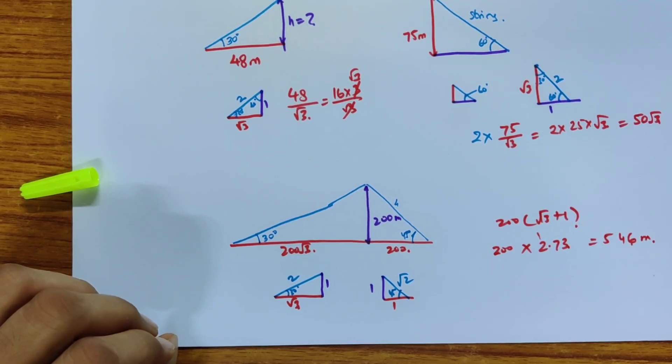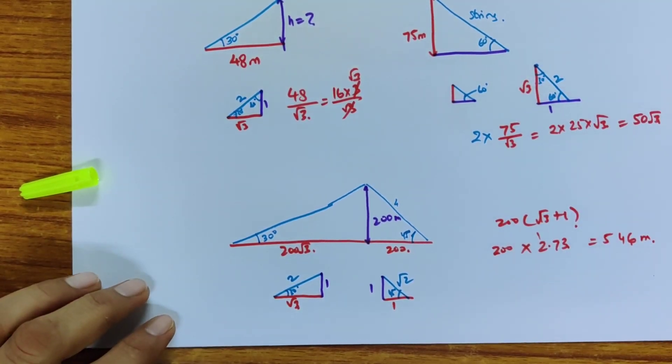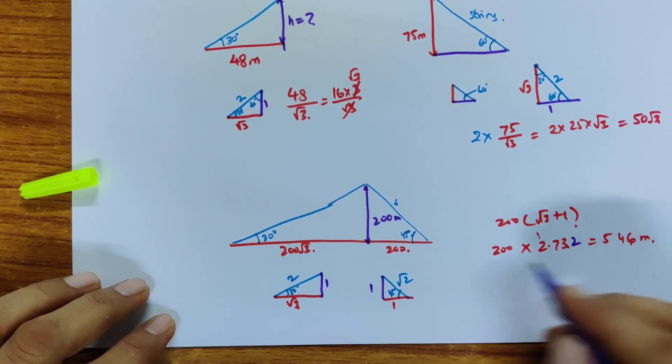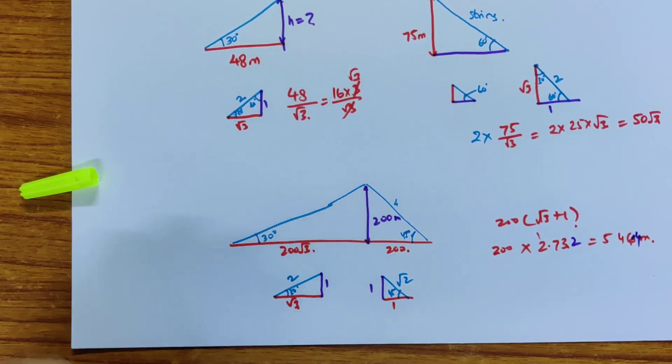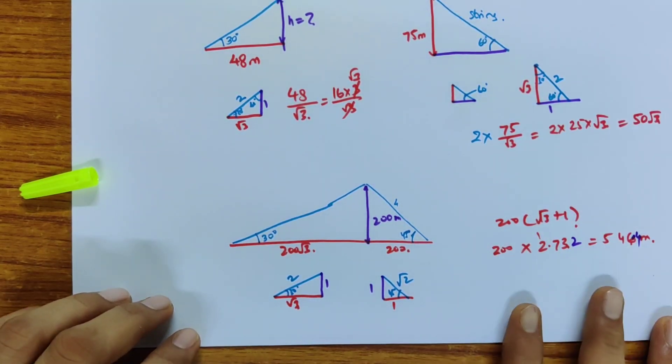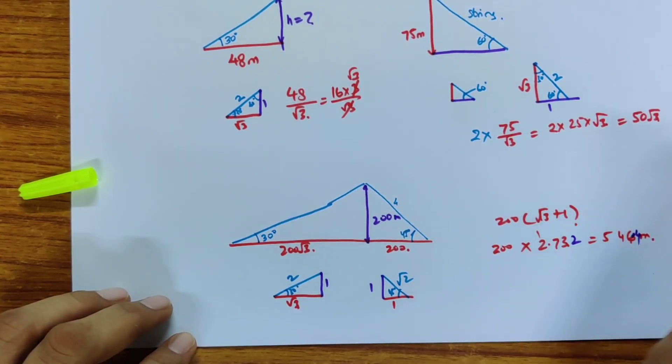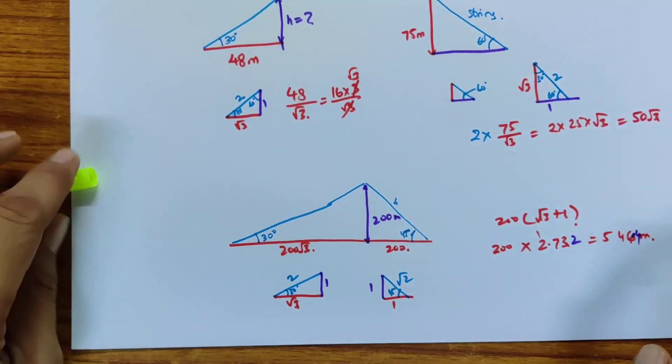And if you wanted more accuracy, then you use 1.732 and then you will get one more decimal. This is how you work with them, approximation. And of course multiply 1.732, you multiply. If you need to get exact distances in meters.